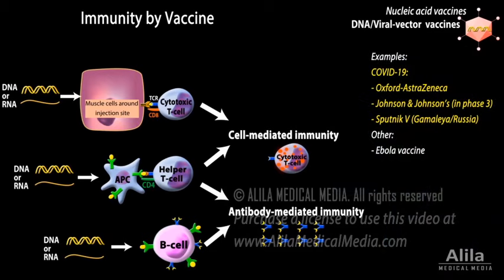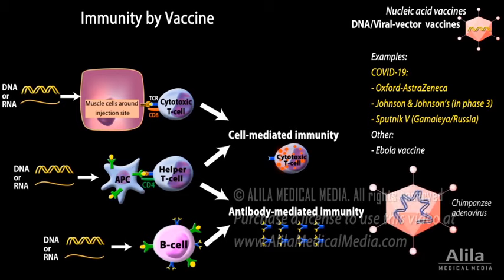For example, the Oxford-AstraZeneca COVID-19 vaccine uses a chimpanzee adenovirus as a vector. The adenoviral genome is modified to remove viral genes, and the coronavirus spike gene is added. This way, the viral vector cannot replicate or cause disease, but it acts as a vehicle to deliver the DNA.